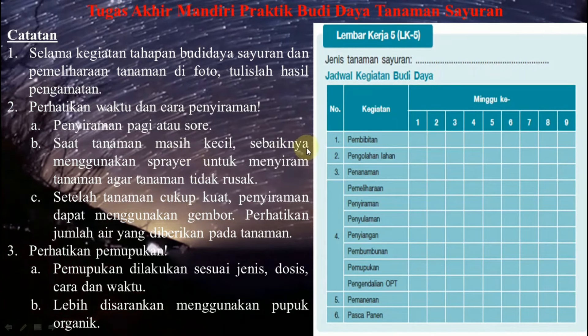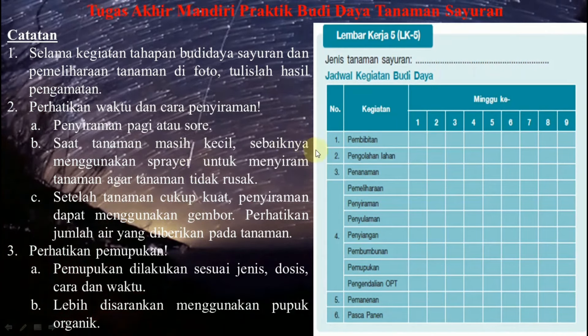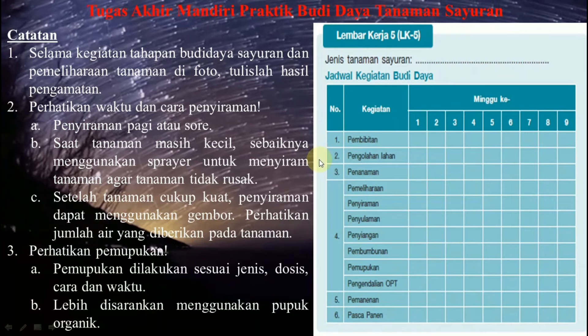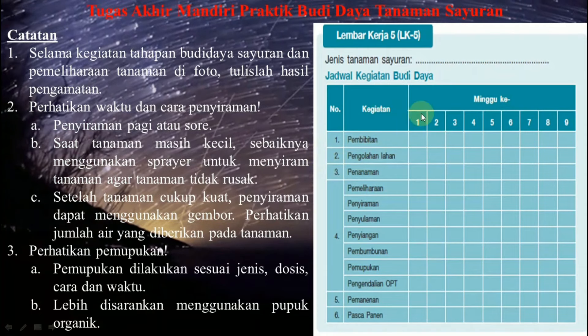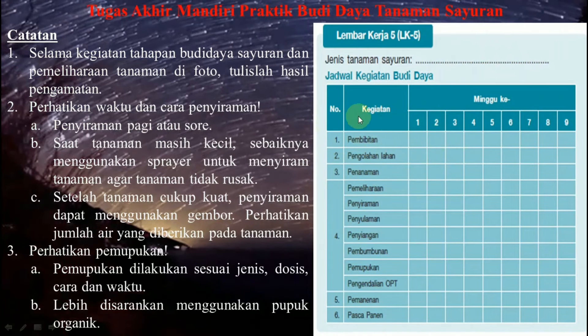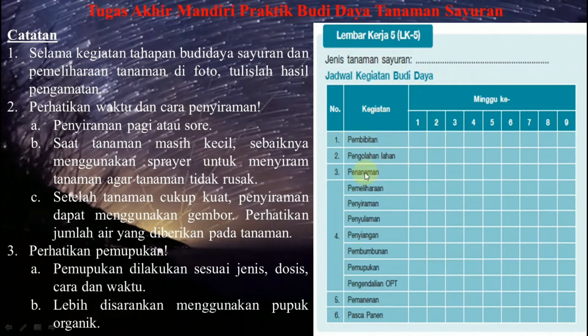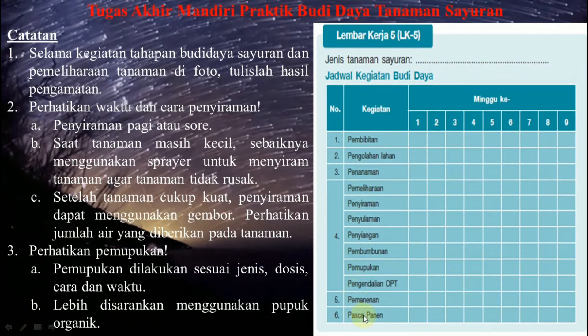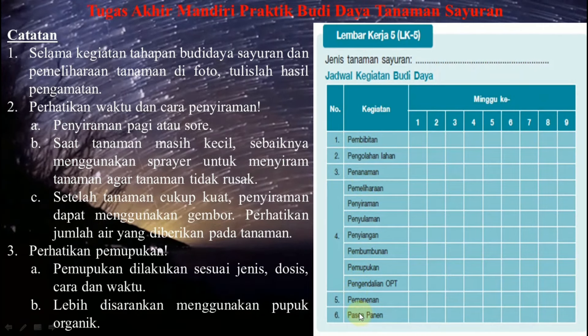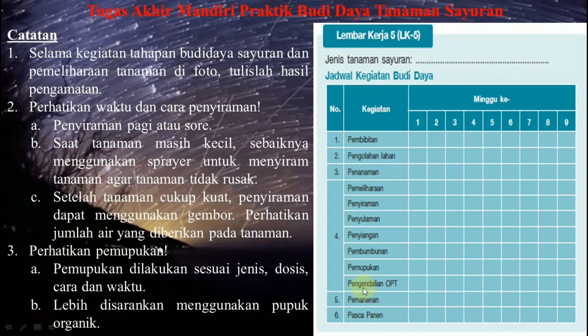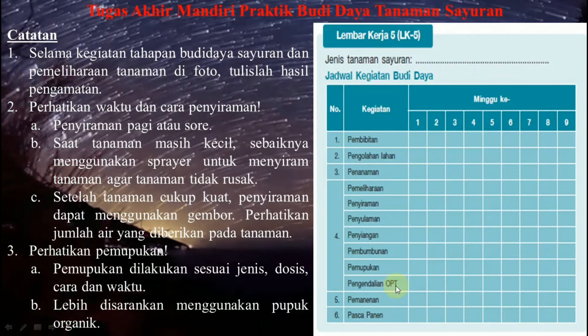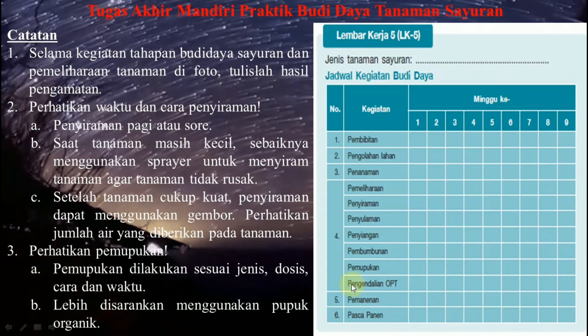Semua kegiatan tahapan dicatat dan difoto mulai dari pengolahan tanah, pembibitan, penanaman, pemeliharaan, panen, serta pasca panen. LK yang diisi adalah LK5: jenis tanaman sayurannya apa, jadwal kegiatan budidayanya mulai minggu keberapa, urutan pembibitan, pengolahan lahan, dan seterusnya sampai pasca panen. Pengendalian organisme pengganggu tanaman (OPT) juga dicatat jika ada.